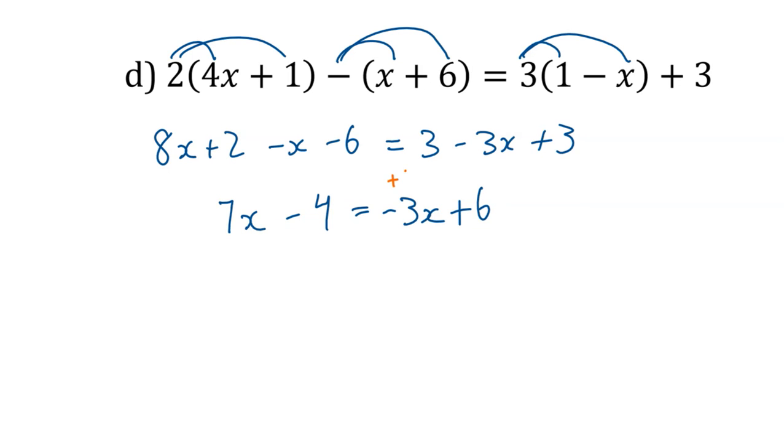So moving the X's to the left, it's negative three X, so I'm going to add three X. Do the same to the other side. It's negative four, so I'm going to add four. Seven X plus three X is ten. Six plus four is ten. And we get to that step where we've got something X equals something, divide by the coefficient, so divide by ten. What's ten divided by ten? One.